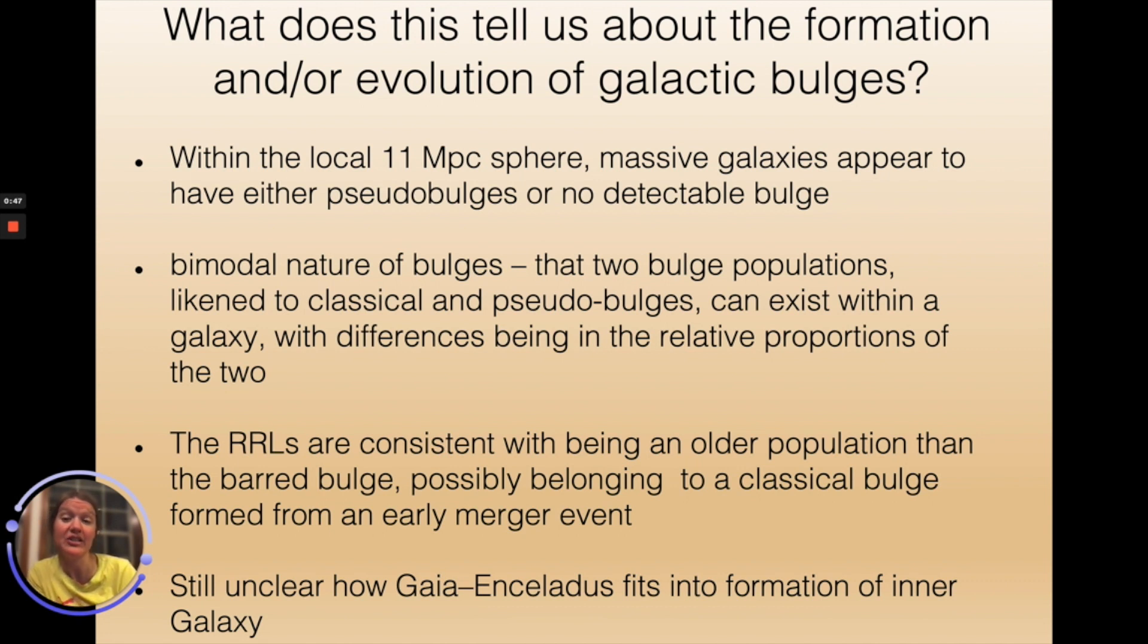Our results indicate that there could be a bimodal nature to bulges, that two bulge populations can coexist within a galaxy. In our Milky Way, the pseudobulge is the dominant bulge that we see when we look at the galactic bulge. However, the RR Lyrae stars indicate that there could be a classical bulge that is also very centrally located in the Milky Way galaxy, coexisting with the barred bulge population. It is still unclear how Gaia-Enceladus fits into the formation of the inner galaxy, and this is something we're actively exploring with our RR Lyrae stars sample. Thank you.